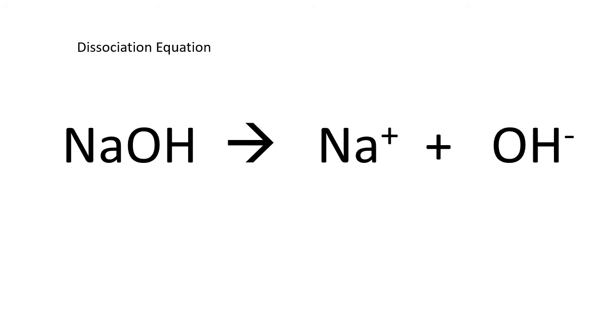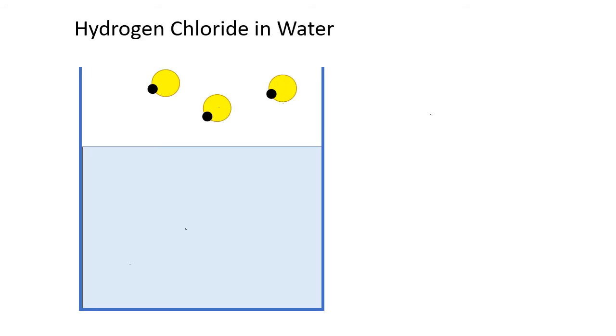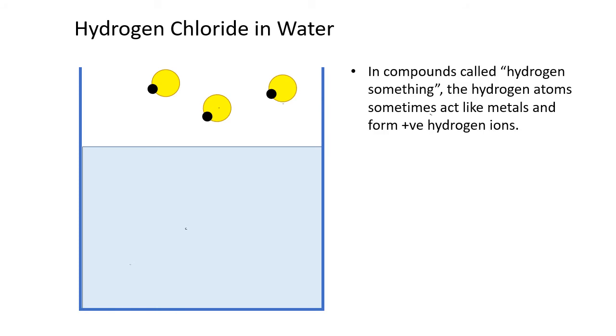One more example. Hydrogen chloride. Hydrogen chloride is a gas, and you would think of it as a covalent compound because it's made of two nonmetals, hydrogen and chlorine. But recall from earlier work, we said that sometimes hydrogen behaves like a metal. Specifically, if the name of the compound is hydrogen something, that's a compound where we can often assume hydrogen atoms are acting like metals, and they will readily give up their electrons to form positive hydrogen ions. And that's what happens when we dissolve these compounds in water.